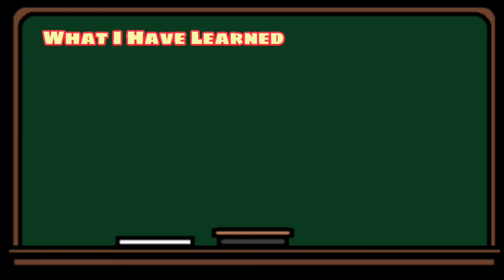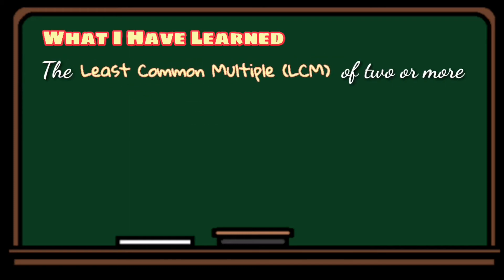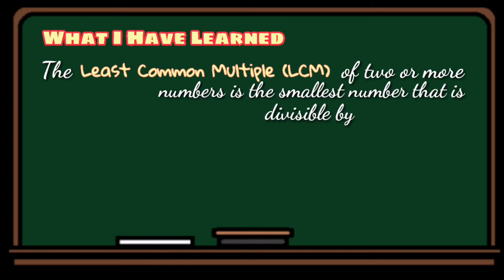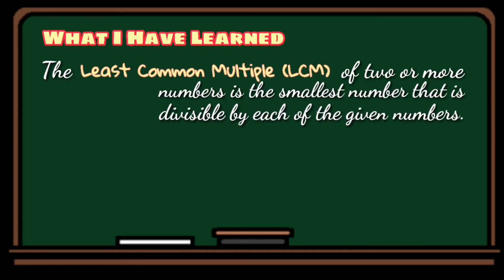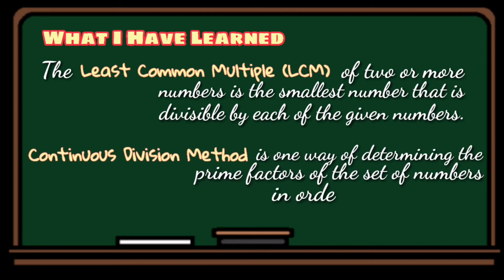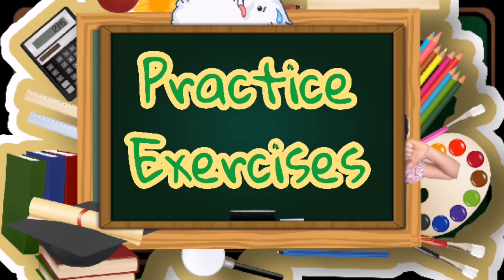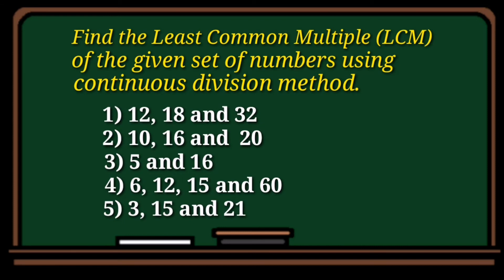What have we learned today? Remember that the least common multiple, or LCM, of two or more numbers is the smallest number that is divisible by each of the given numbers. Continuous division is one way of determining the prime factors of a set of numbers in order to get the LCM. Now it's practice time — find the least common multiple of the given pairs of numbers using the continuous division method.